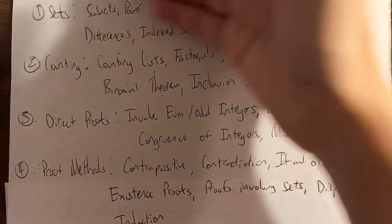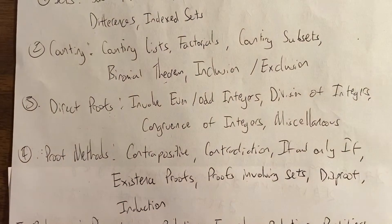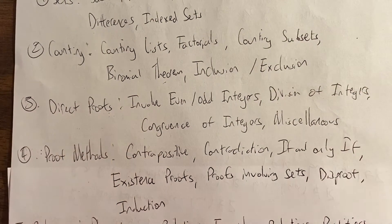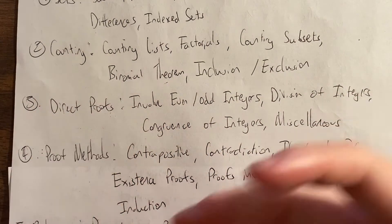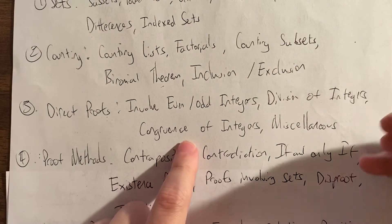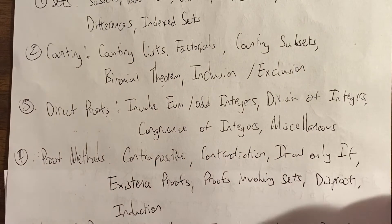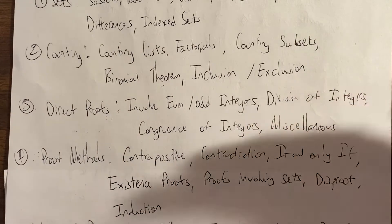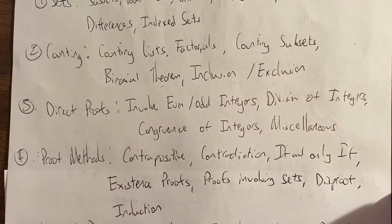Then, after we do all these videos — so that's actually a third of the series, basically — we are ready for actual proofs. So we start off with direct proofs, so we directly prove something, and you'll see how that works. What we do is we use definitions of certain mathematical concepts. The ones we focus on are even and odd integers, division of integers, congruence of integers, and then we have some miscellaneous direct proofs. So we're using definitions to prove certain things, and we're using mathematical objects and their definitions.